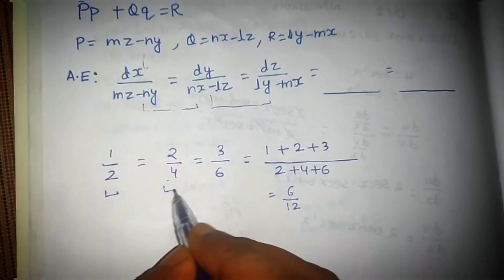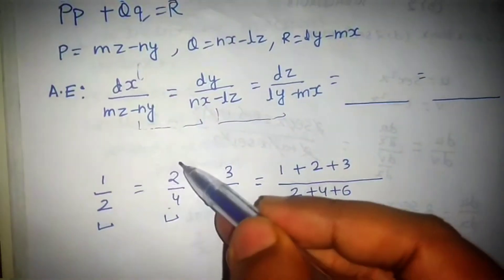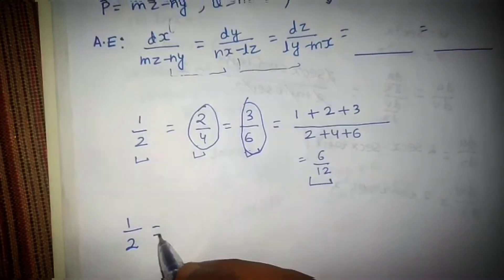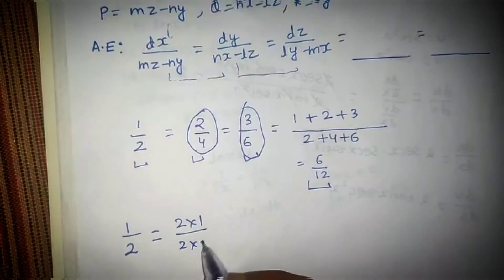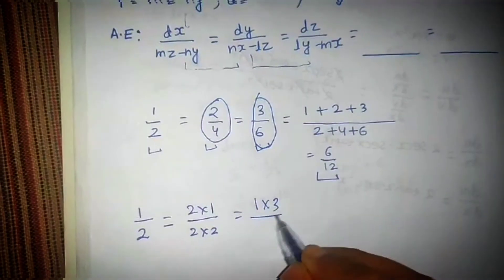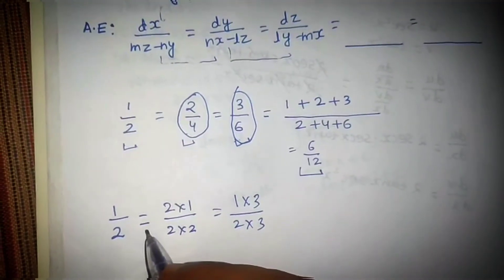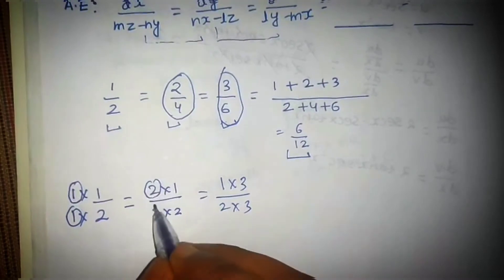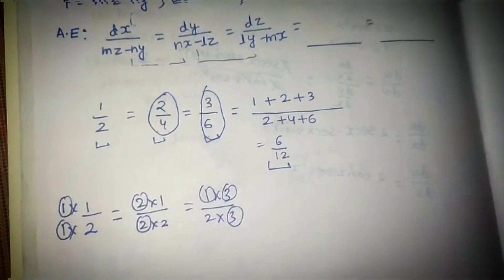If these three fractions are not sufficient, you can generate any number of fractions. How did we get the second and third fractions? Starting from 1/2, I multiplied both numerator and denominator by 2 to get 2/4. For the third fraction, I multiplied by 3 to get 3/6. So in the first fraction the multiplier was 1, in the second it was 2, and in the third it was 3. This is the thinking part that makes method of multiplier a bit difficult.